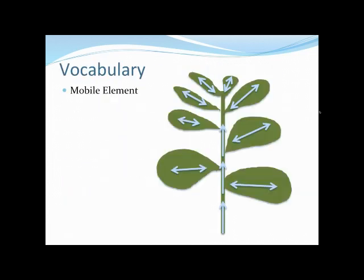Some vocabulary. Mobile elements — what we mean by this is not only do the elements get taken up by the plant, but mobility refers to whether they can be reallocated throughout the plant. So they move into the leaves, and the question is: can the plant move those elements out of those leaves and into different parts of the plant? That is a mobile element.